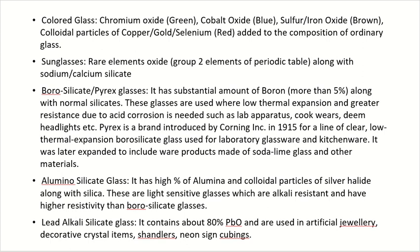Alumino-silicate glass has a high percentage of alumina and colloidal particles of silver halide along with the basic structure of glass, that is silica. These are light-sensitive glasses, also alkali resistant, and have higher resistivity compared to borosilicate glasses. Lead alkali silicate glass contains 80% lead oxide, and is used in artificial jewellery, decorative crystal items, chandeliers, and similar items. These are cut in such a way so that they give more reflection, as in jhoomer or jewellery.